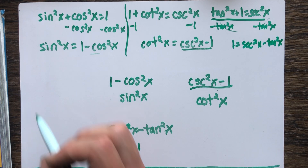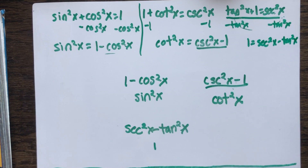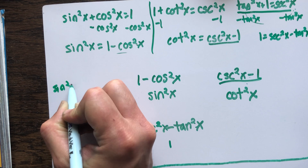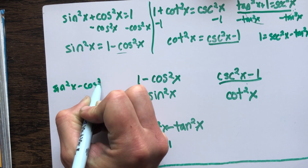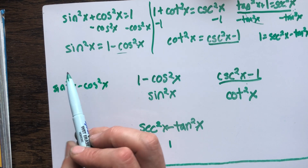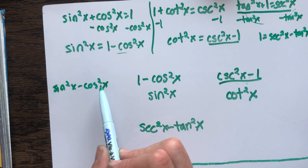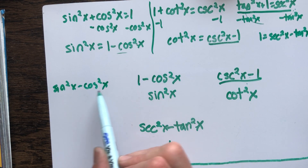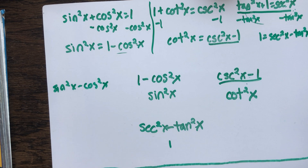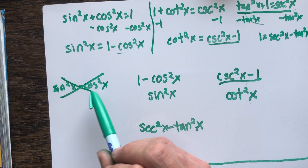Sometimes you might get tricked. If you see something like sine squared minus cosine squared, there's nothing you can do with that. There's no way to take the Pythagorean identities and rewrite them so one side looks exactly like that. You can try, but it's never going to match. So just be careful — that's something where you can't use the Pythagorean identities, but it's always worth looking first to see if there's a way to make it work.